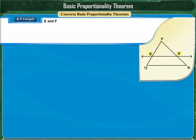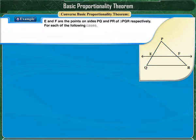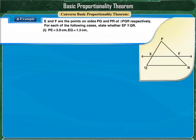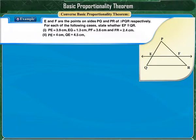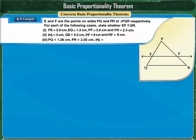E and F are points on sides PQ and PR of triangle PQR respectively. For each case, state whether EF is parallel to QR. Case 1: PE = 3.9 cm, EQ = 1.3 cm, PF = 3.6 cm, FR = 2.4 cm. Case 2: PE = 4 cm, QE = 4.5 cm, PF = 8 cm, RF = 9 cm. Case 3: PQ = 1.28 cm, PR = 2.56 cm, PE = 0.18 cm, PF = 0.36 cm.